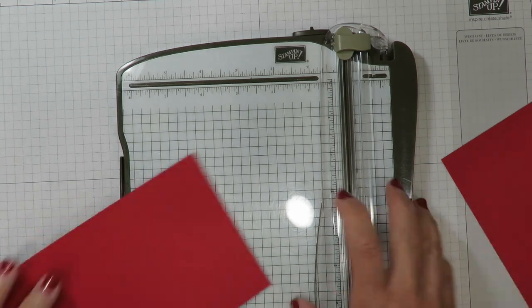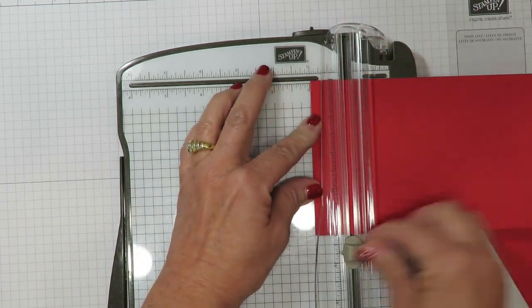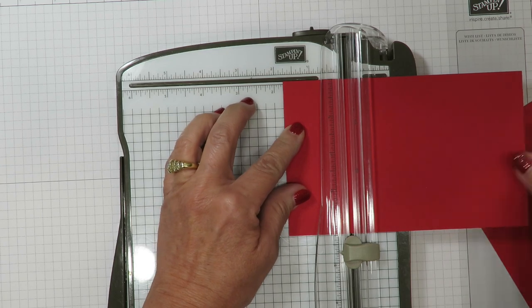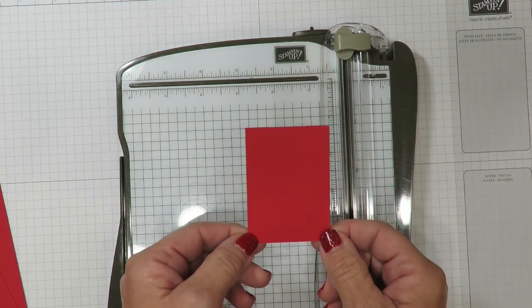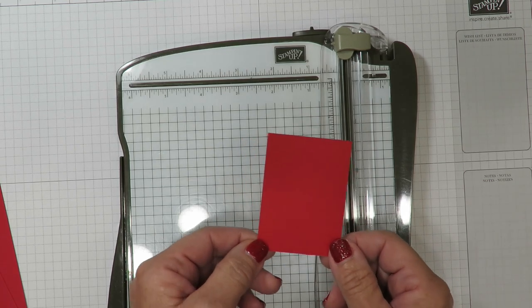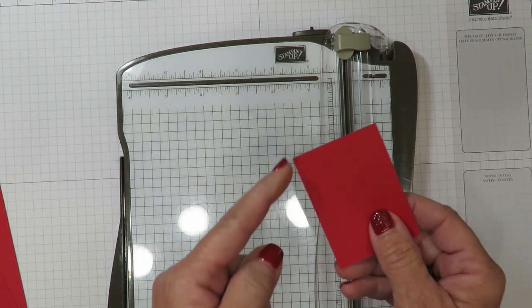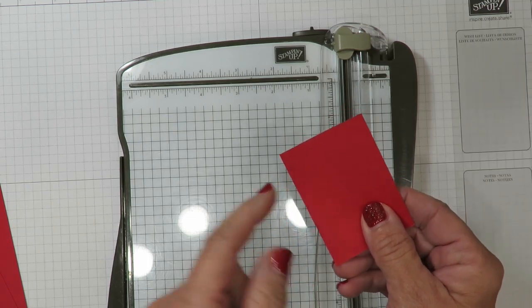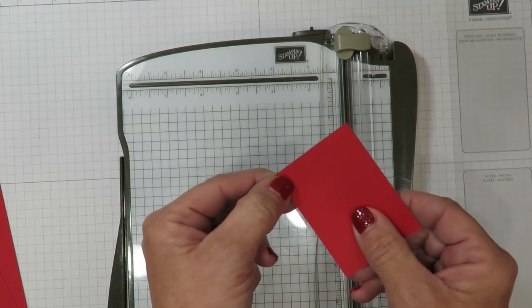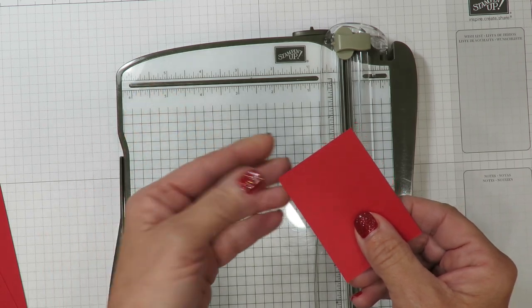The next step is a small piece of coordinating cardstock that measures two by two and three quarters. We're going to make a very small score line here in the corner to create the bend for the mechanism of the wiper or the pop-up in this case.